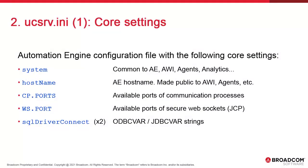ucsrv.ini is the configuration file. It contains many configuration settings. The first is the system name, which is critically important. It sets the name of the entire Atomic instance, and the other components like agents and AWI rely on it for AE connections, so it has to be consistent. Atomic administrators use this to differentiate system types — say test, QA, or prod. The hostname setting should be set to the AE hostname. This information will be made public to the other components, which facilitates component connections.